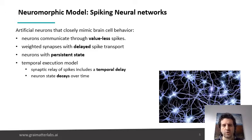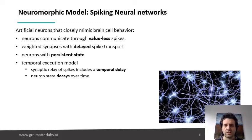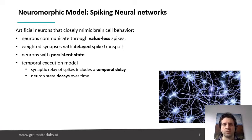This is different from our typical artificial neural networks that transport values through the synapses. Here, we are actually transporting valueless spikes — it's just a signal that says 'I'm here' or 'I'm not here'. That's why it's normally referred to as a spiking network.